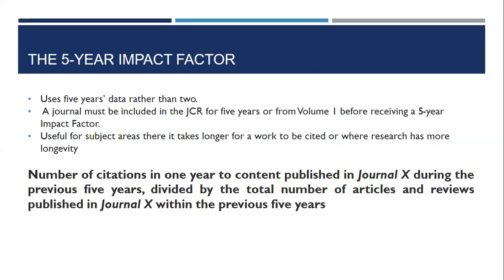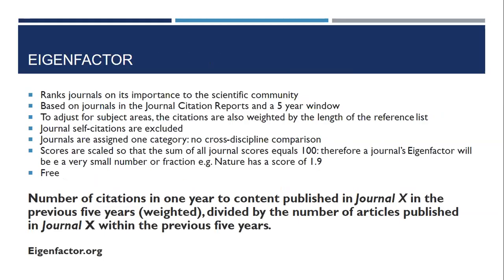Bearing the two-year limitation in mind, Eugene Garfield suggested a five-year impact factor as an alternative. Two years works well for fast-moving sciences where articles are quickly cited again, but for disciplines where research has more longevity, or for smaller journals that may only publish once a year, the five-year impact factor provides a larger pool of articles for a more meaningful calculation.